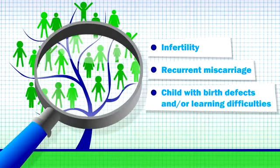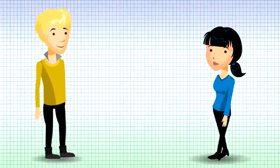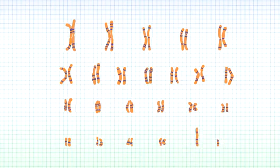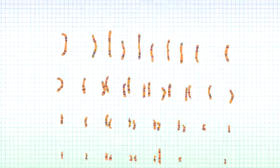In order to become a parent, you have to make a mature egg or sperm. Normally, each pair of chromosomes come together, exchange genetic material known as crossing over, and divide.